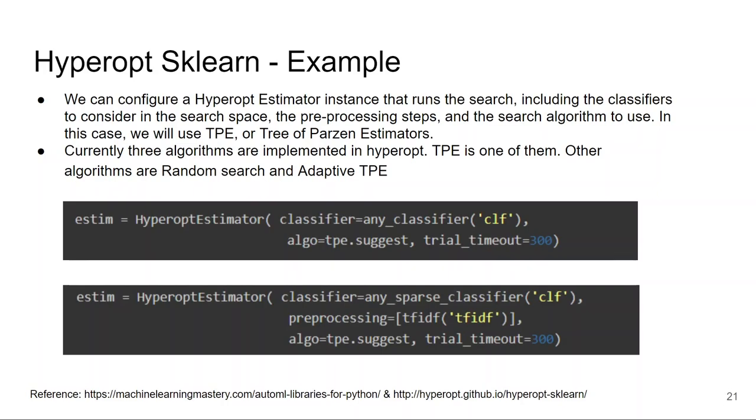Currently, three algorithms are implemented in Hyperopt: they are Random Search, TPE, and Adaptive TPE. TPE is Tree of Parzen Estimators. Currently, in this code we are using TPE. In this way, using Hyperopt-sklearn, you can reduce the search space as well, and Hyperopt-sklearn can be used for both regression and classification problems.